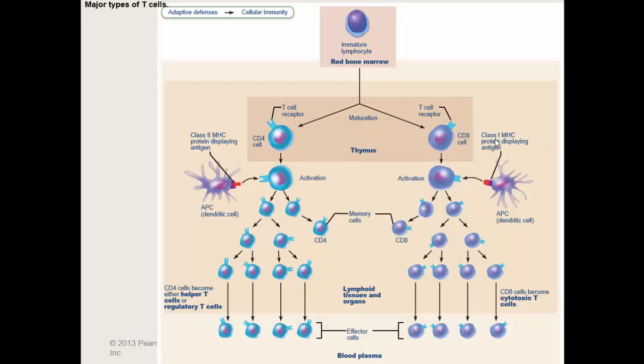Unlike B cells, where there's just one type, T cells come in three different types. It really depends on what MHC antigen they can recognize — that triggers them.